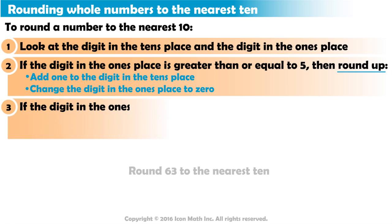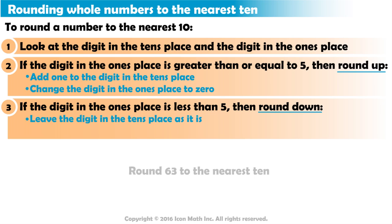If the digit in the ones place is less than 5, we round down. That is, we just leave the digit in the tens place as it is and change the digit in the ones place to 0.